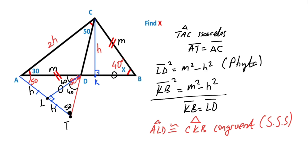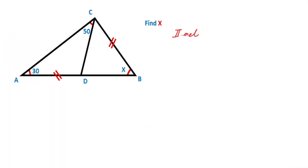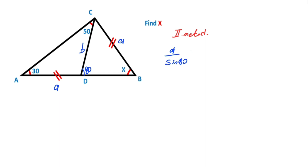That was the first method. Now we will calculate the value of x using the second method. First step: let's call the equal sides A and the other side B. You know that two interior angles equal one exterior angle, so angle BDC equals 80 degrees. For this triangle, if we apply the sine rule: A over sine 80 must equal B over sine x. That means A over B must equal sine 80 over sine x. This is the first equation.